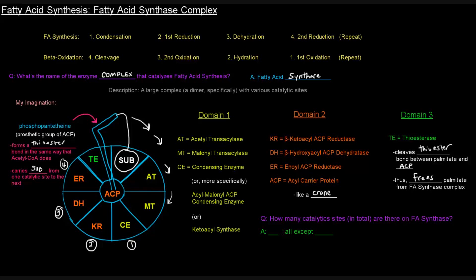Okay, so how many catalytic sites in total are there on the fatty acid synthase? Well, everything with an -ase, right? Condensing enzyme or synthase. Basically, it's everything except the acyl carrier protein, the ACP. So that's one, two, three, four, five, six, seven, so seven. It's all except the ACP, because the ACP is not actually a catalytic site, right? It's just carrying the substrates from one site to the next. Okay, so that's pretty much it.